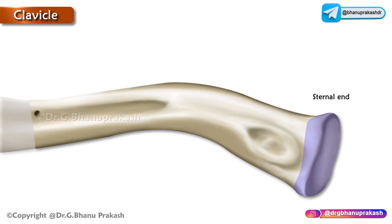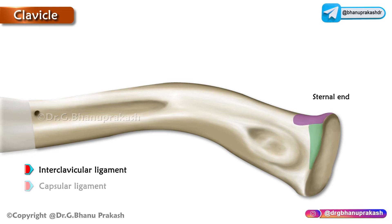The sternal end is quadrangular and articulates with the clavicular notch of the manubrium sterni. The upper part gives attachment to the interclavicular ligament, the capsular ligament of the sternoclavicular joint, and the articular disc of the sternoclavicular joint.